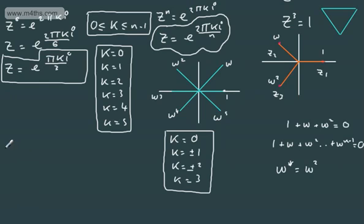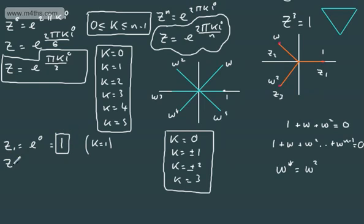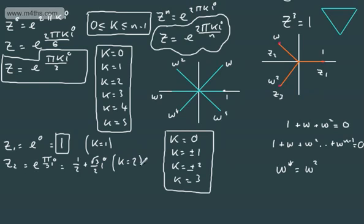Starting with k=0: z1 = e to the 0 = 1. Taking k=1: z2 = ω = e to the πi/3. In Cartesian form, e to the πi/3 gives us ½ + (√3/2)i. So when k equals 1, that gives us omega.